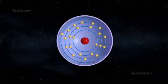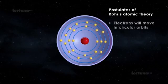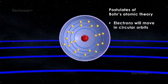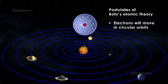Let's look more closely at the postulates of Bohr's Atomic Theory. According to the Bohr model, the electrons of an atom will move in circular orbits around the nucleus in much the way the planets orbit the sun.